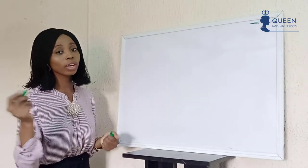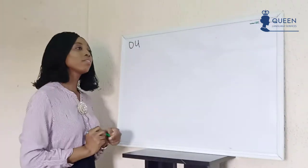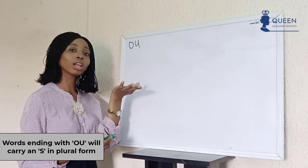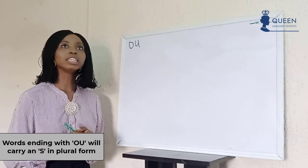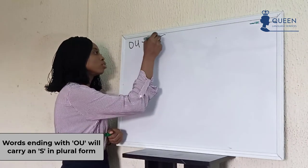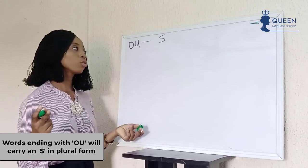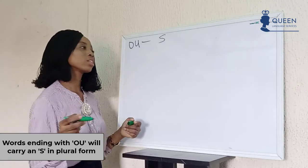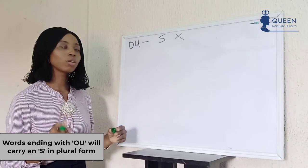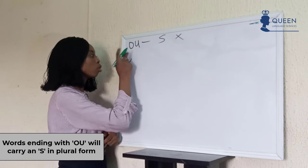Words ending with -ou: in the singular form it ends with -ou, but normally in the plural form we have an -x added. There are exceptions to this rule as well — for the exception, you just have -s added to the back of it. Let's look at it in words like 'le chou.'